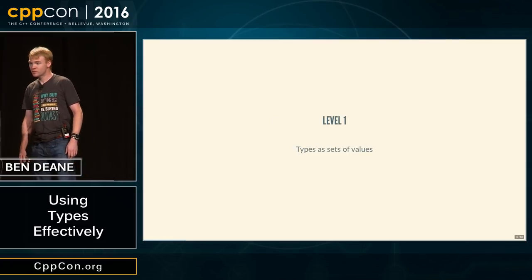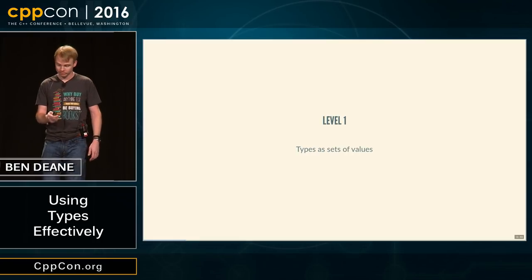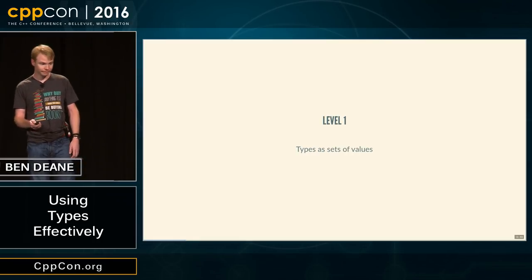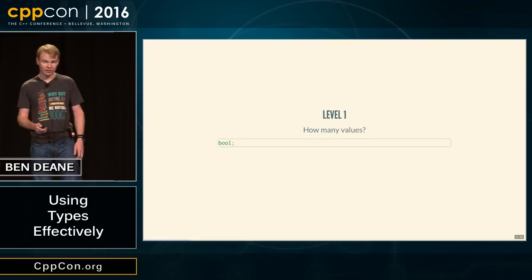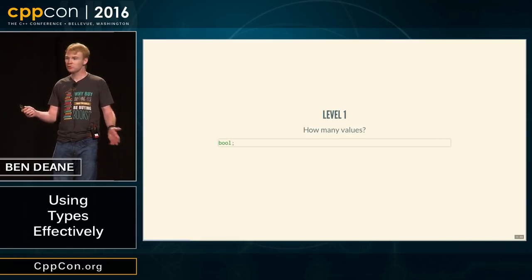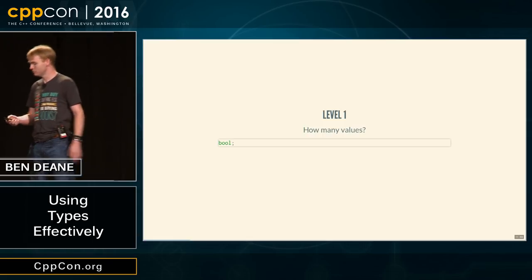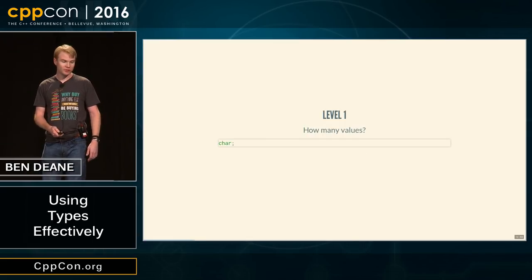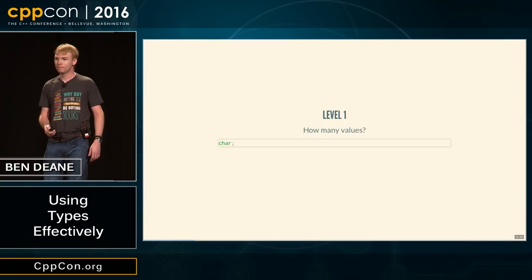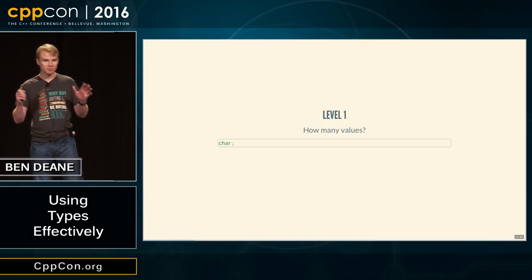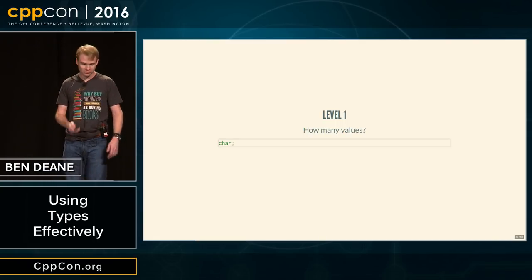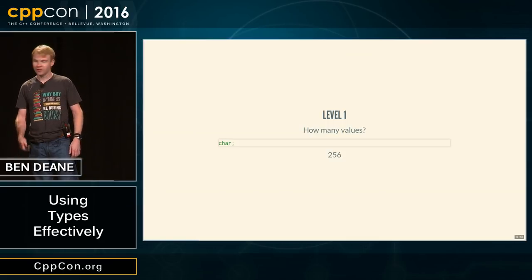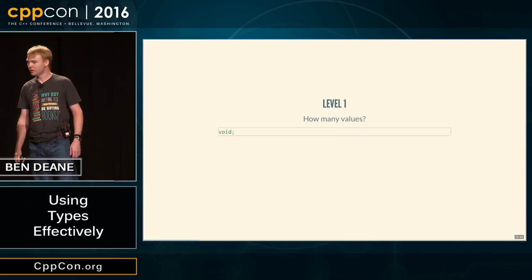Types as sets of values — that's level one of the game. How many values here? Two, right — obvious. How about now? 256, yes. You're a very smart crowd — of course you are, you're at CppCon. But it does get a little harder.